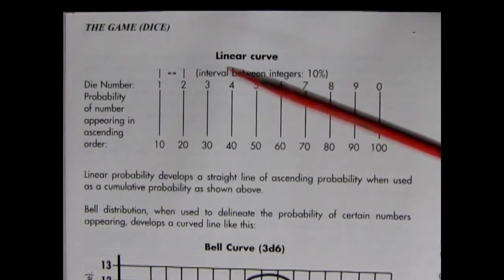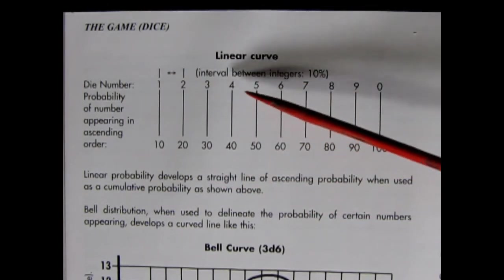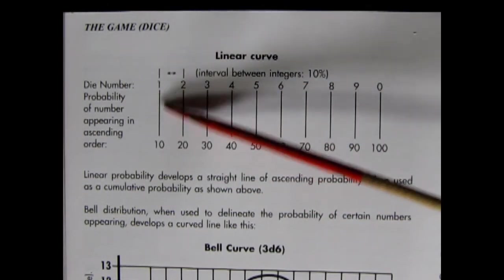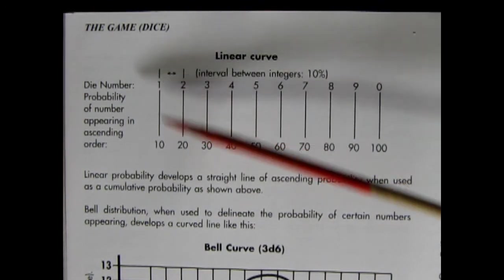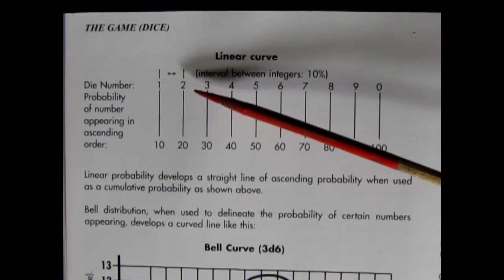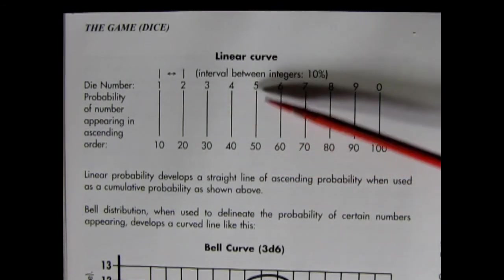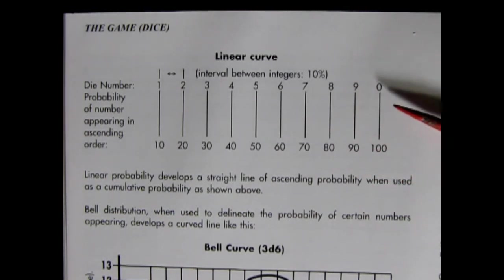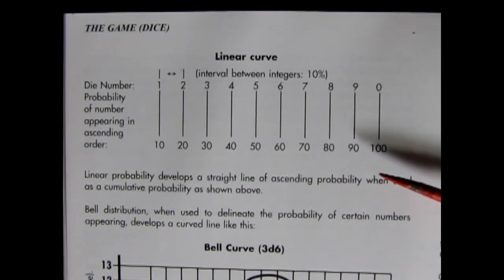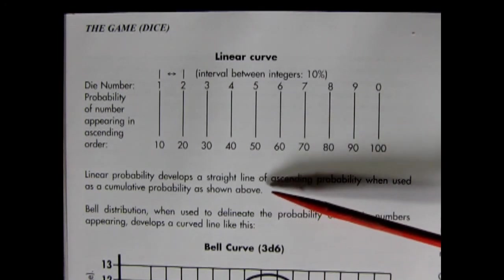Linear curve. The die number, probability of number appearing in ascending order. Interval between integers, ten percent. So on a ten sided dice if you roll a one, it is ten percent. Two is twenty percent. Three is thirty percent. Four is forty percent. Five fifty percent. Six sixty percent. Seven seventy percent. Eight eighty percent. Nine ninety percent. And ten or zero is a hundred percent.